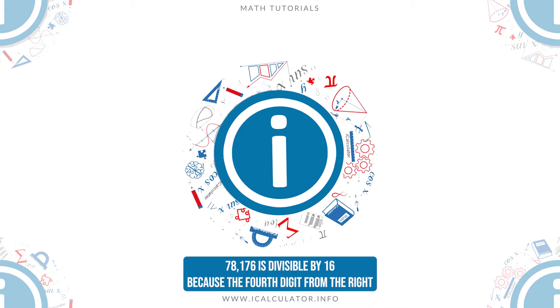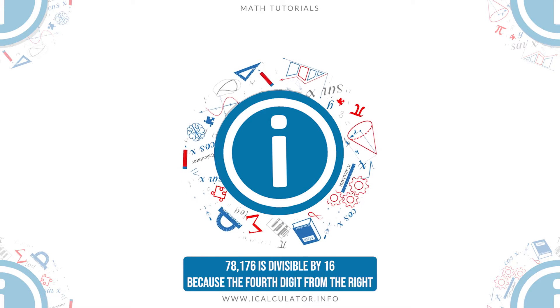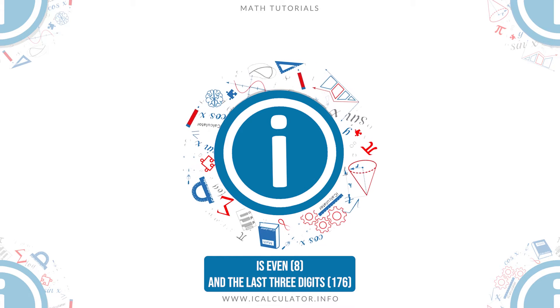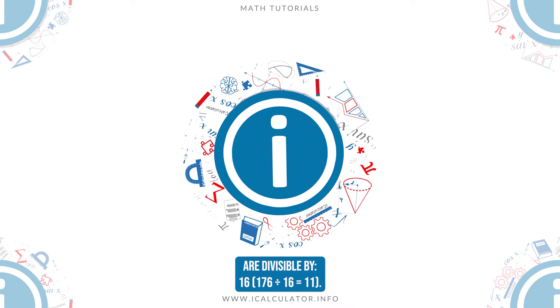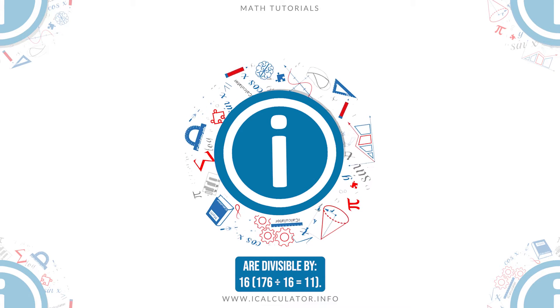For example, 78176 is divisible by 16 because the fourth digit from the right is even, 8, and the last three digits, 176, are divisible by 16. 176 divided by 16 is equal to 11.